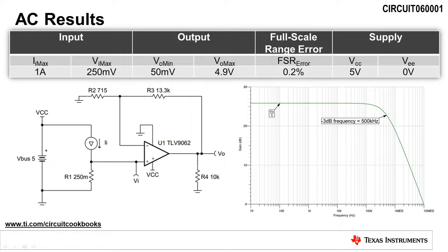Running an AC sweep analysis, we find that the bandwidth of the circuit is 500 kilohertz.